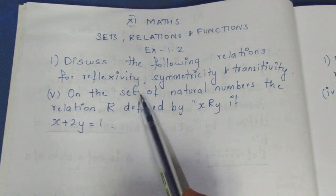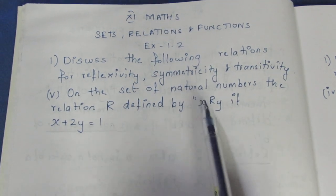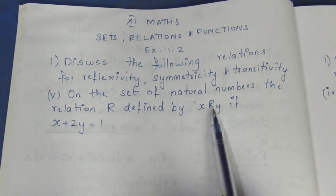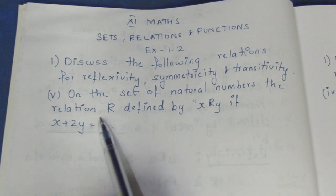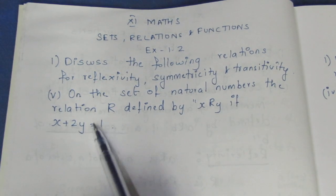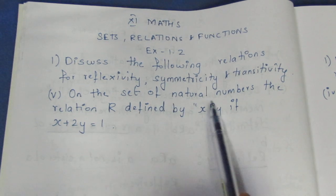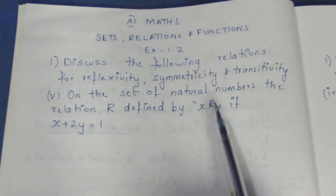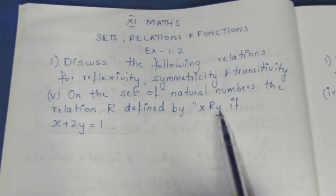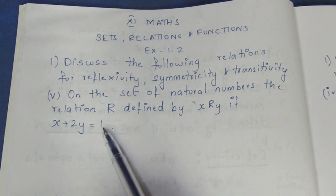On the set of natural numbers, the relation R is defined by x related to y if x plus 2y equals 1, where x and y belong to natural numbers.